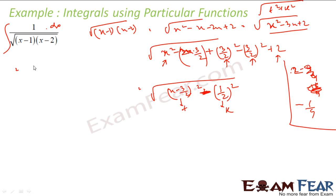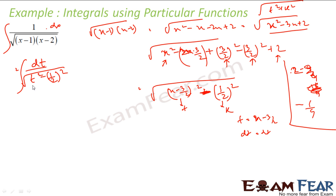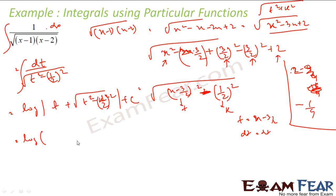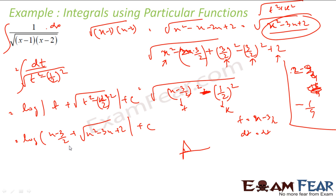So I converted the integral as dt / √(t² - (1/2)²), where t = x - 3/2. If t is x - 3/2, then dt = dx, so I just wrote dx as dt. This formula I know: it equals log of |t + √(t² - k²)| + C, where k = 1/2. Just replace t with x - 3/2: this becomes log|x - 3/2 + √(x²-3x+2)| + C, since t² - (1/2)² is nothing but x²-3x+2. And that is the answer.